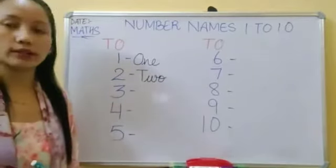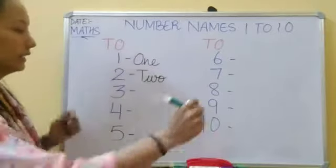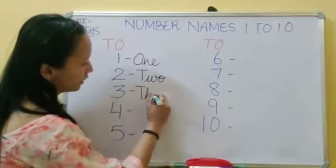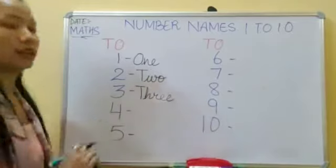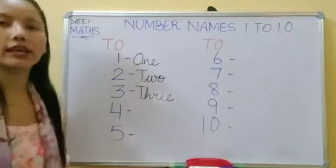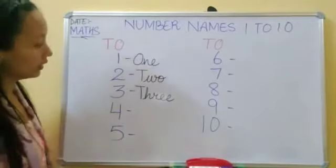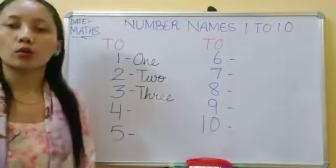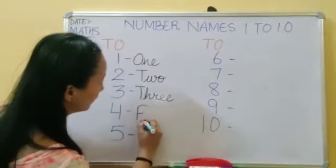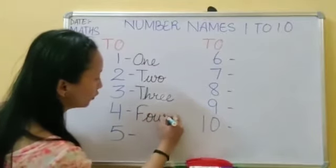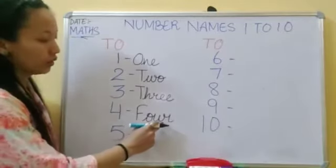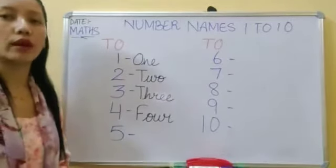Number 3 — what is the spelling of 3? Capital T, H, R, double E — THREE. Number 4 — what is the spelling of 4? Capital F, O, U, R — FOUR. Very good!